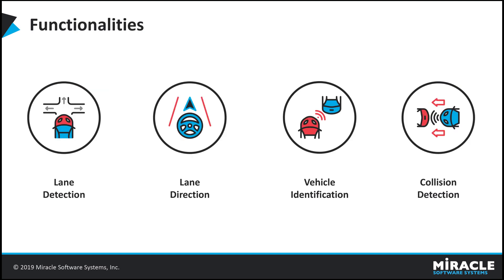Now let's go through the functionalities we have implemented in our application. We have implemented lane detection, lane direction, vehicle identification, and collision detection. In lane detection, we detect the lane in which the car is going through, rendered with green color. Lane direction identifies the direction of road ahead — left curve, right curve, or straight. Vehicle identification identifies all vehicles on the road, whether a truck or a car. In collision detection, if any vehicle is within the proximity range of our vehicle, a warning text will be immediately shown along with a red color bounding box around the vehicle nearest to our car.